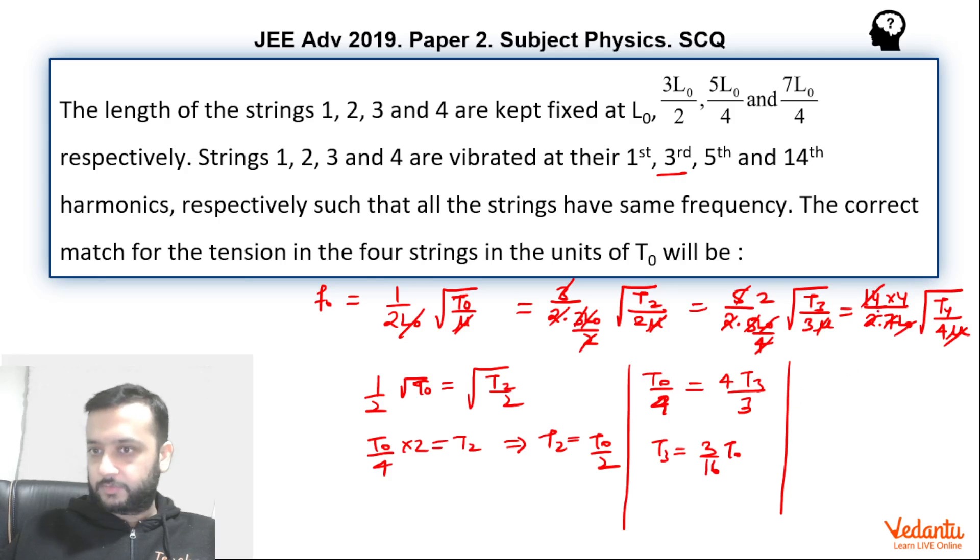Similarly, if you square this, you get T0 upon 4 equals 4 into 4 into T4 upon 4. So basically this will be gone. So T4 will be T0 by 16.